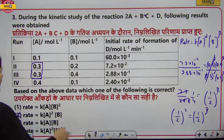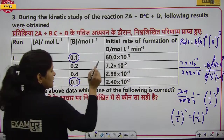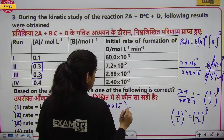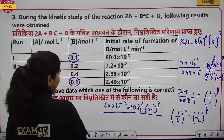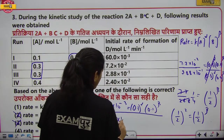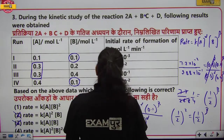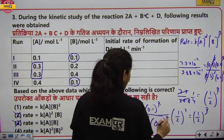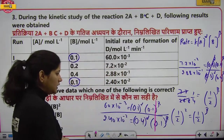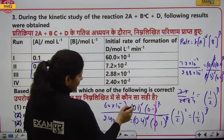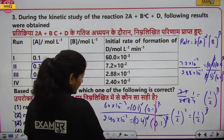अब α निकालते हैं। जहाँ [B] = 0.1 same हो — first और fourth experiment select करते हैं। Rate₁ = 60 × 10⁻³, Rate₄ = 2.40 × 10⁻². Divide करने पर (0.1/0.4)^α = (1/4)^α। यहाँ data में printing mistake है — 60 की जगह 6 होना चाहिए।